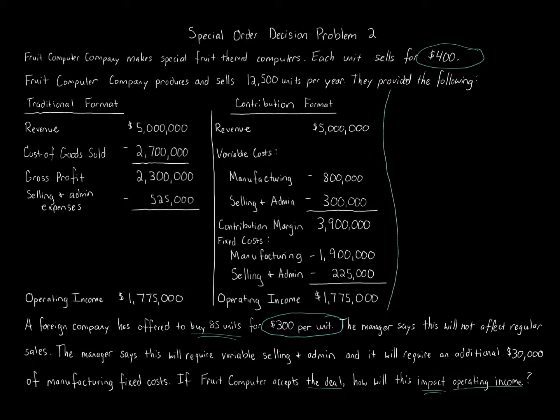A foreign company has offered to buy 85 units for $300 each — below the normal $400 price. The manager says this will not affect regular sales, which is an important consideration because other customers might want a price match if they find out. The manager also says this will require variable selling and administrative costs plus an additional $30,000 of manufacturing fixed costs — we need to take all of that into account.